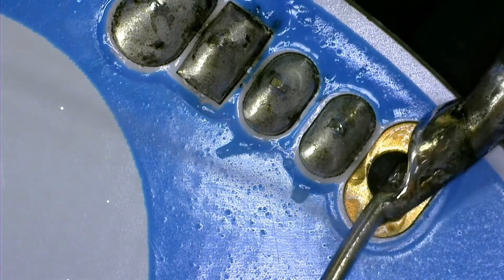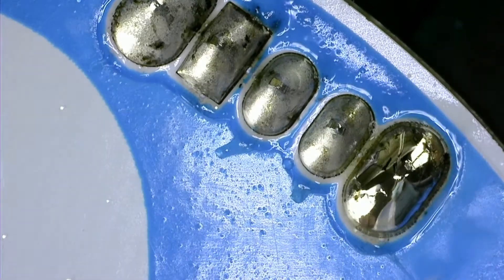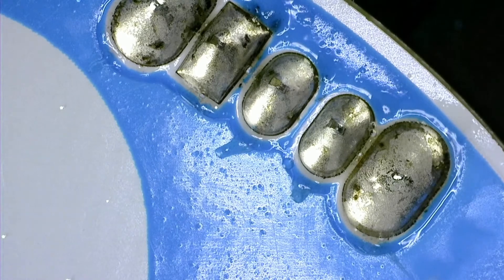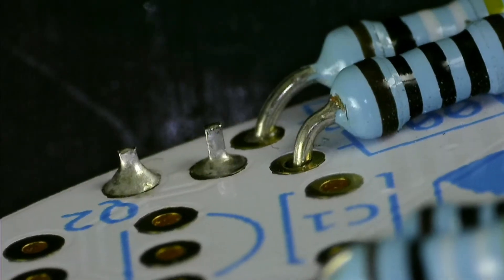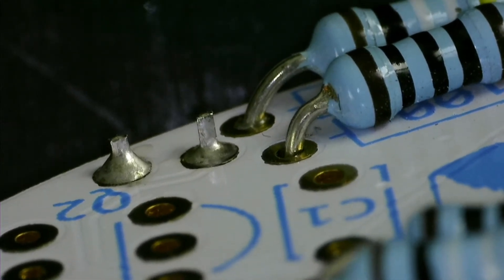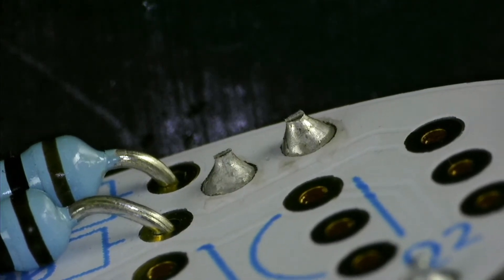A good solder joint should cover the whole pad, flow up the lead a little, and look shiny while liquid. When lead-free solder cools, it crystallizes a tiny bit and looks a little bit dull. This is normal and okay. A perfect solder joint will have concave sides, but if yours is a little more blobby, it's okay. It's better to have a little too much solder to begin with than not enough.